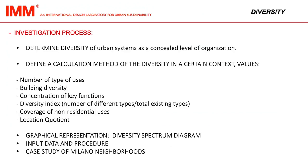The authors investigate the diversity of urban systems as a concealed level of organization. It emerges by synchronized states between the basic elements of the urban system. The basic elements of the urban system are types of uses, voids, volumes, and links. Considering the city as a complex adaptive system,